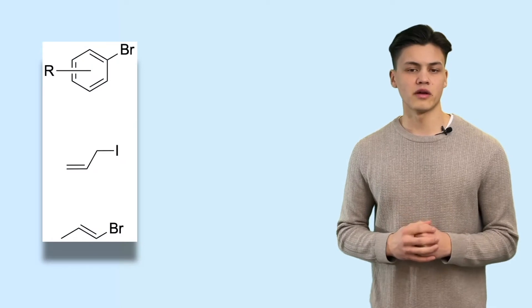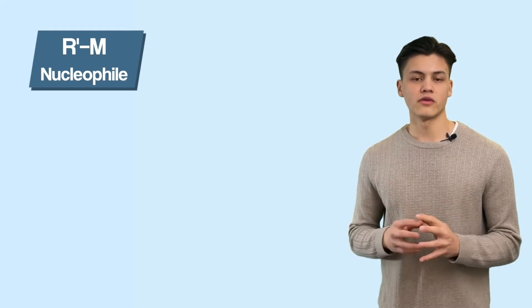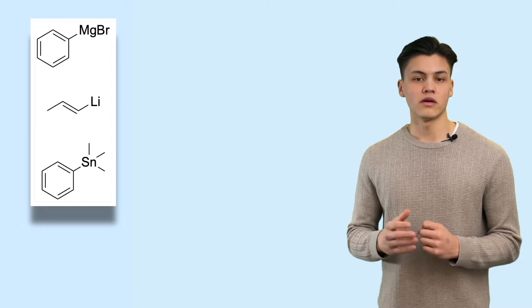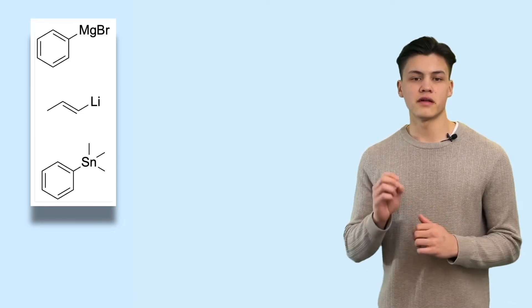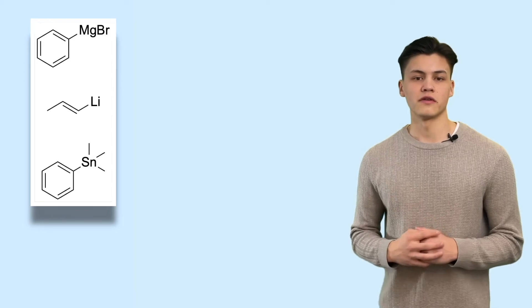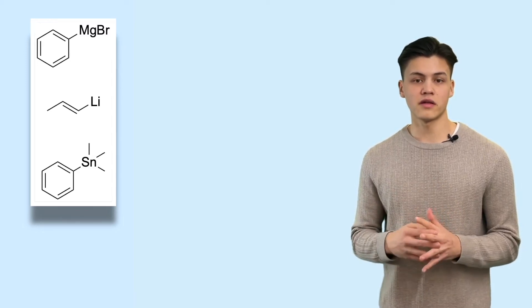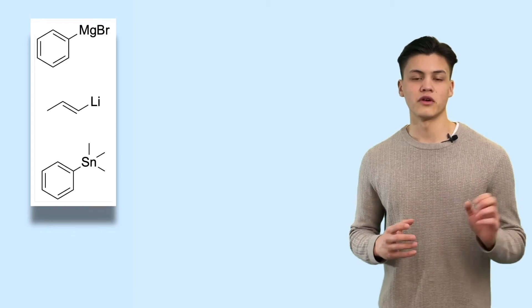Here you can see some examples. On the other hand, we have our nucleophile. RM stands for any kind of organometallic reagent, such as Grignard reagents, but later we'll see it can also be tin or even boron. The key is that it has a negatively charged carbon, so it can act as a nucleophile. The organic rest can be literally anything in this case — it only matters for the electrophile which kind of organic rest it is.